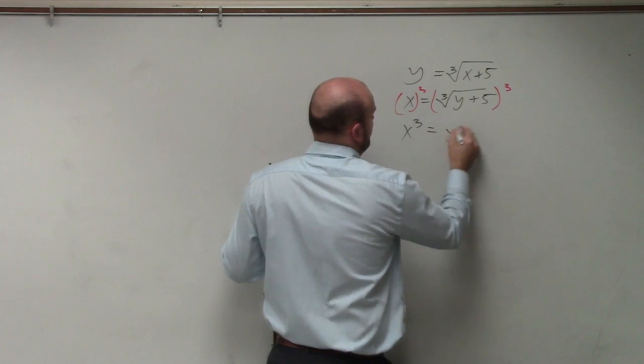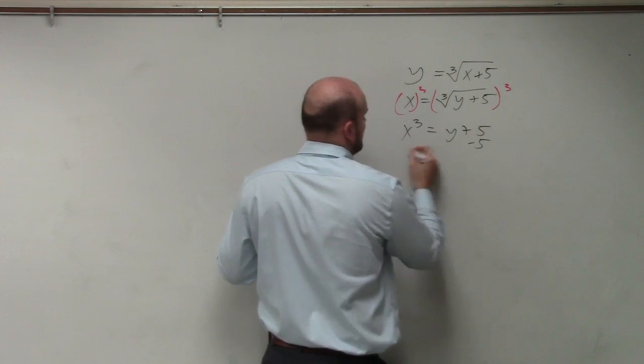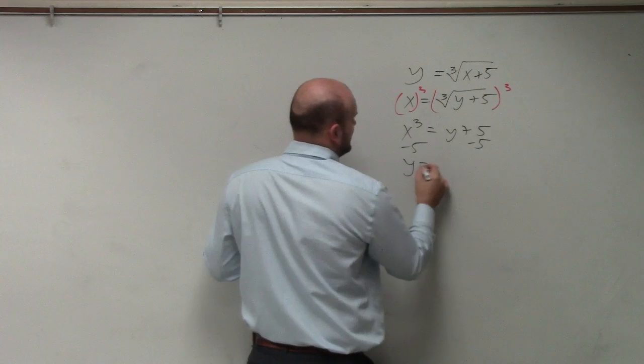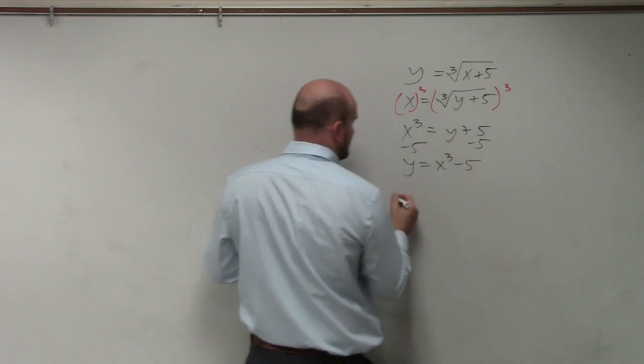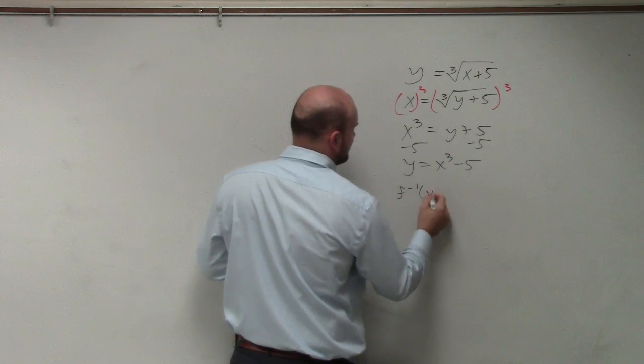x cubed equals y plus 5. Subtract 5, subtract 5. y equals x cubed minus 5. And therefore, rewrite it in inverse notation.